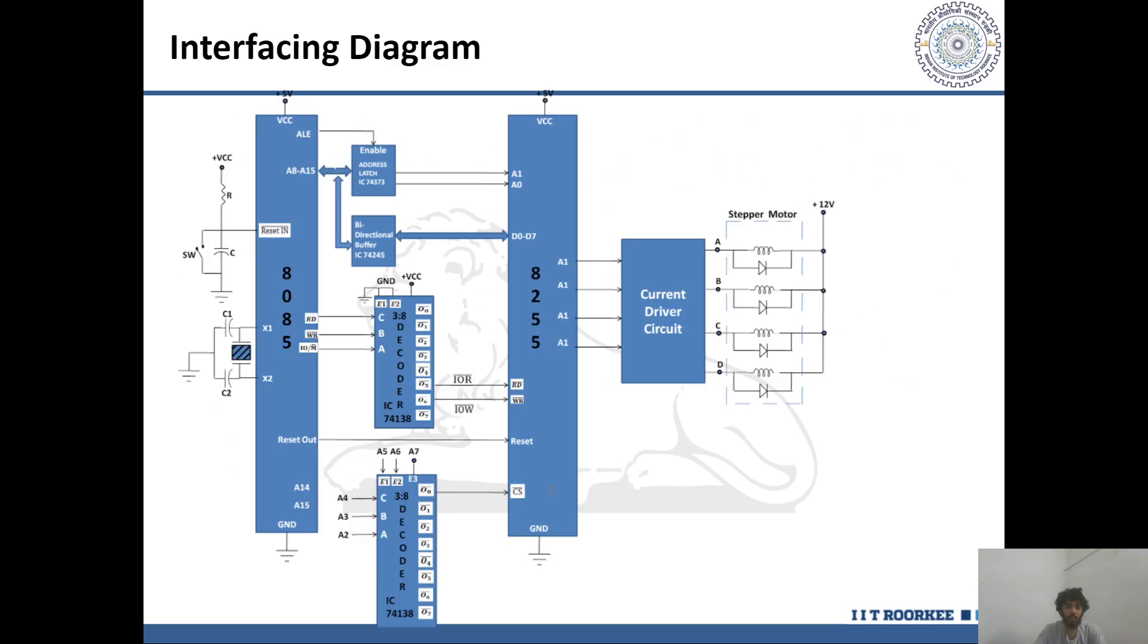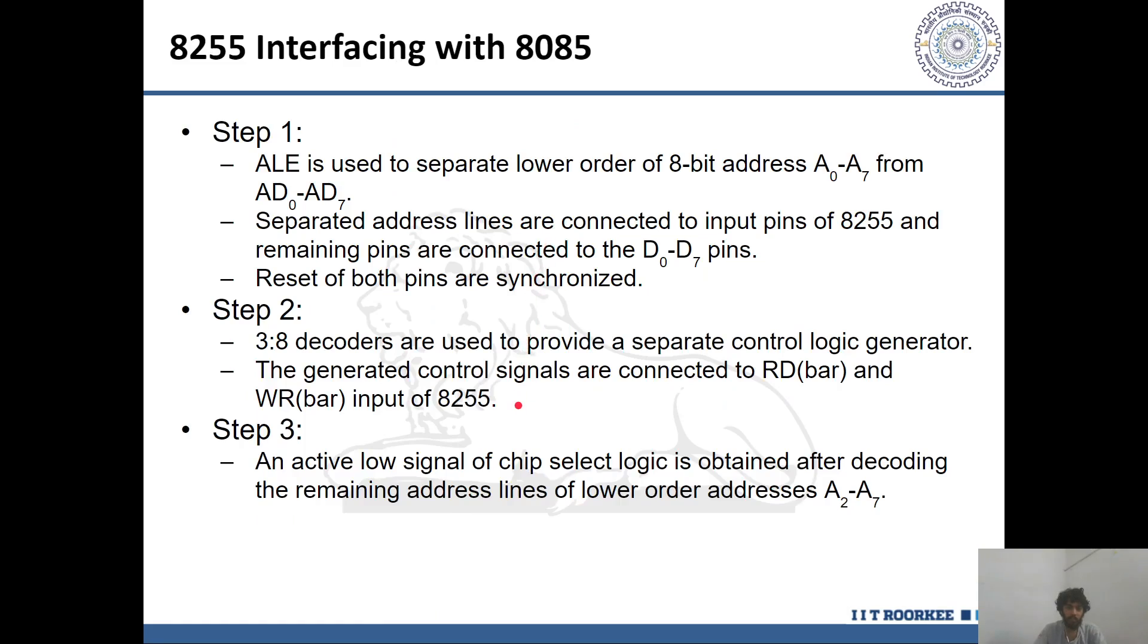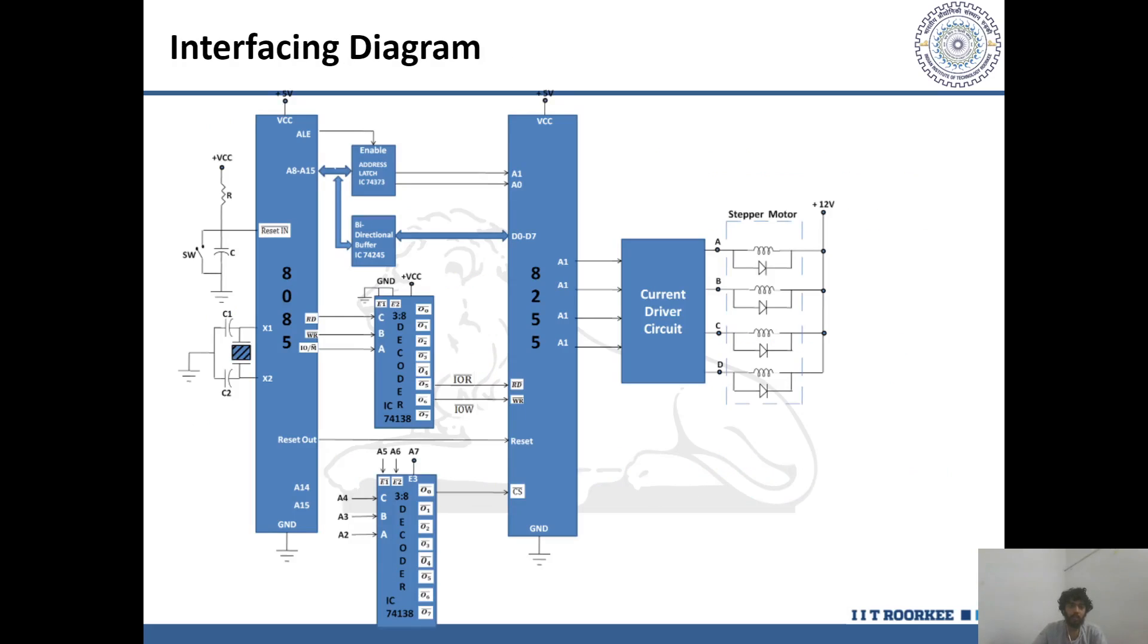Following is the circuit diagram for interfacing stepper motor with 8085 microprocessor which performs three steps. First, the lower order of the 8-bit address A0 to A7 is separated from the AD0 to AD7 using the address latch enable buffer and the ALE signal. The separated address lines A0 to A7 are connected to the A0 to A7 pins of the 8255 which is basically a PPI, a Programmable Peripheral Interface, an input-output device. The separated data bus D0 to D7 are connected to the D0 to D7 pins of the 8255.